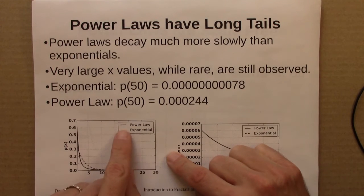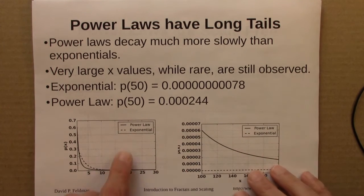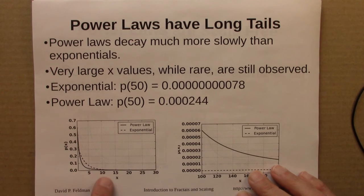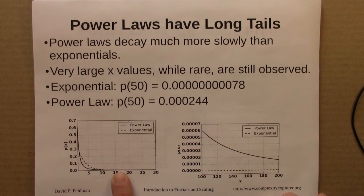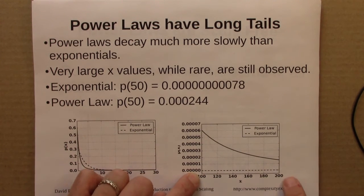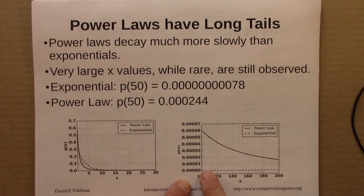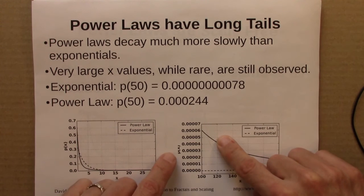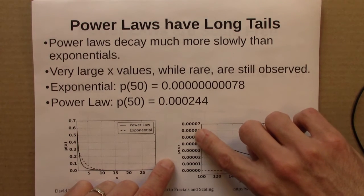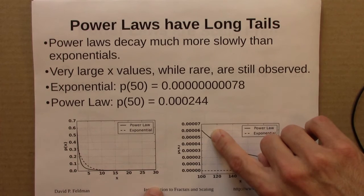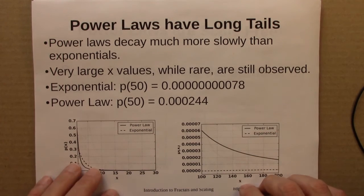So here are two plots. The power law is the solid line. Exponential is the dotted line. And this shows that in this range, it looks like they both decay, and it looks like they're both zero by the time we get to 15. But that's not really the case. If we look from 100 to 200, the exponential now is indistinguishable from zero. But the power law is small, .00005, but not impossibly small.